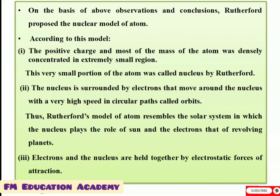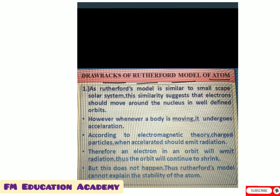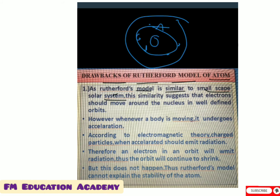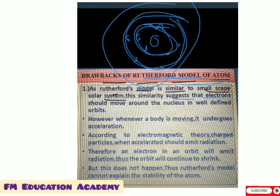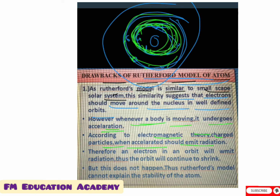Let us now see the drawbacks of Rutherford's model of atom. Since Rutherford's model resembles a small-scale solar system, it suggests that electrons move around the nucleus in well-defined orbits. Whenever a body is moving, it undergoes acceleration. According to electromagnetic theory, charged particles when accelerated should emit radiation. The electrons moving in well-defined orbits will accelerate, and according to electromagnetic theory, they should emit radiation.